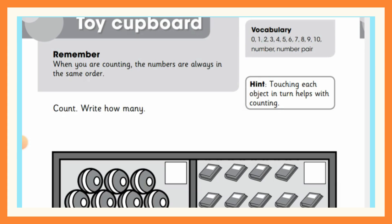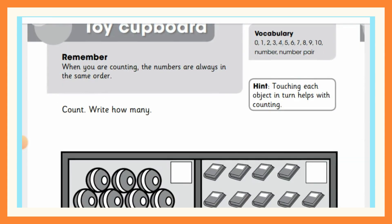For example, you see over here there are numbers from 0 to 10: 0, 1, 2, 3, 4, 5, 6, 7, 8, 9, 10. The number order means that 1 comes after 0, 2 comes after 1, and 3 comes before 4. So the numbers are in the same order. Don't mix them up — you cannot go 0, 3, 4, 5, 9, 10. The correct order is 0, 1, 2, 3, 4, 5, 6, 7, 8, 9, 10.